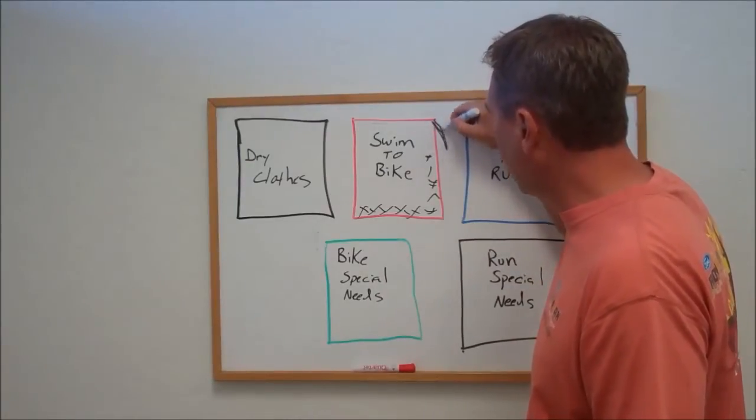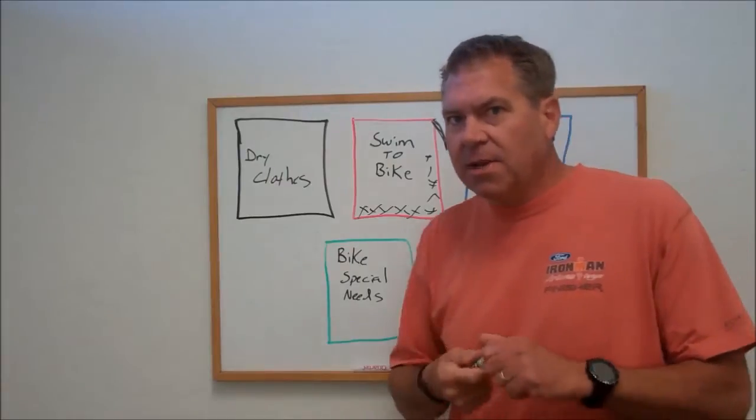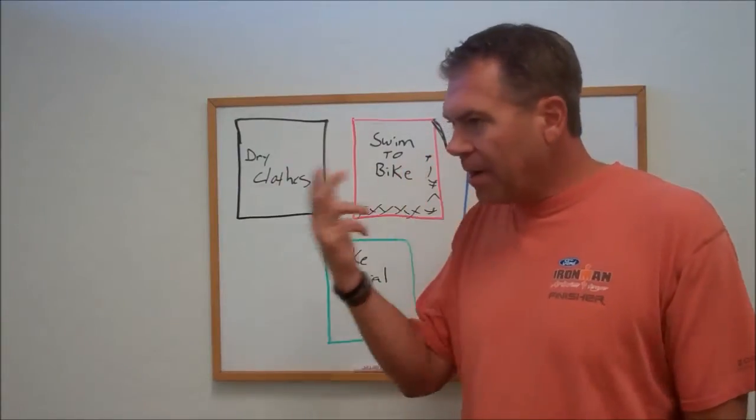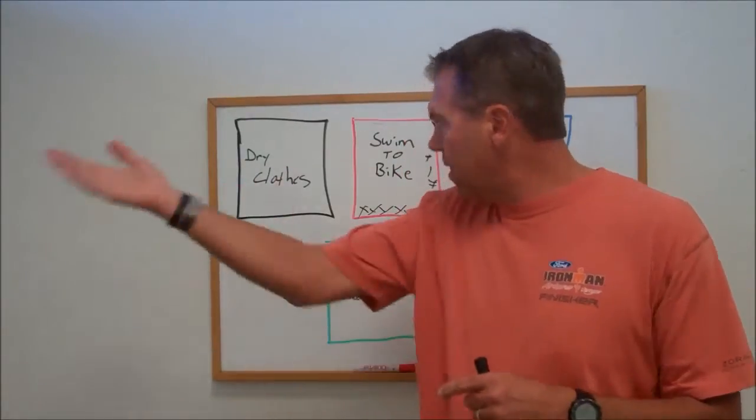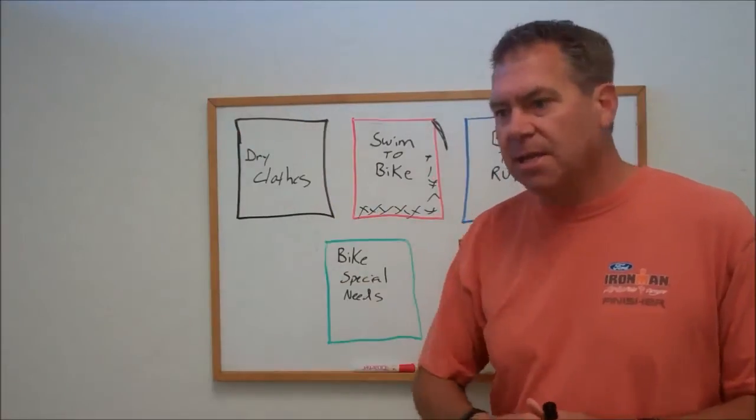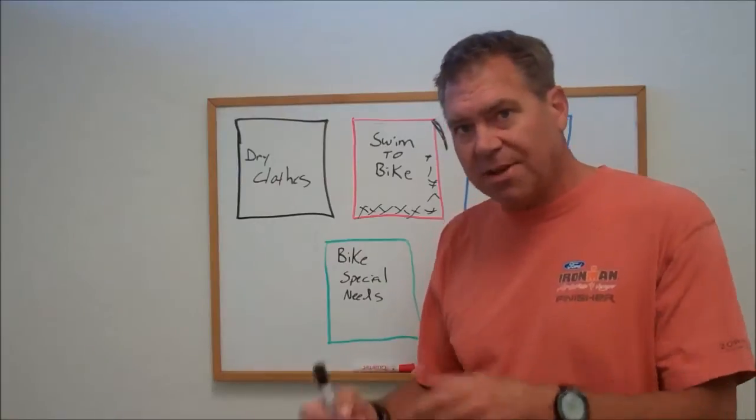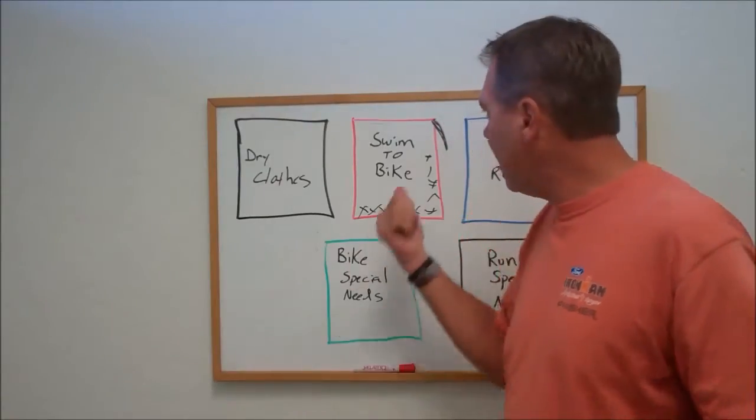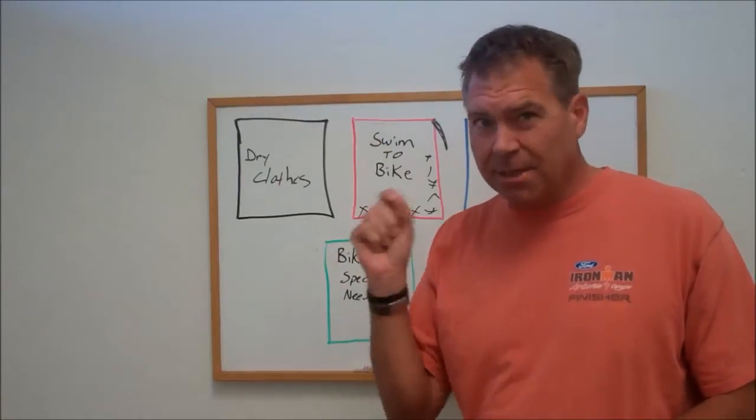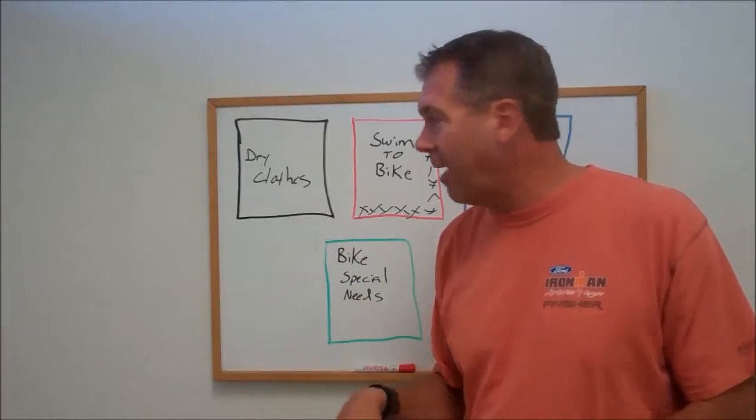Or tie a ribbon, a colored ribbon on it. It's going to definitely help you when you come out of the water, you're running up, there's a big line of all these swim to bike bags. Even though you got your number, they're all jam packed in there and the volunteers will do their best to try to hand them to you. But if you have some identifying markers on it, it makes it a little bit more easy to pick it out.